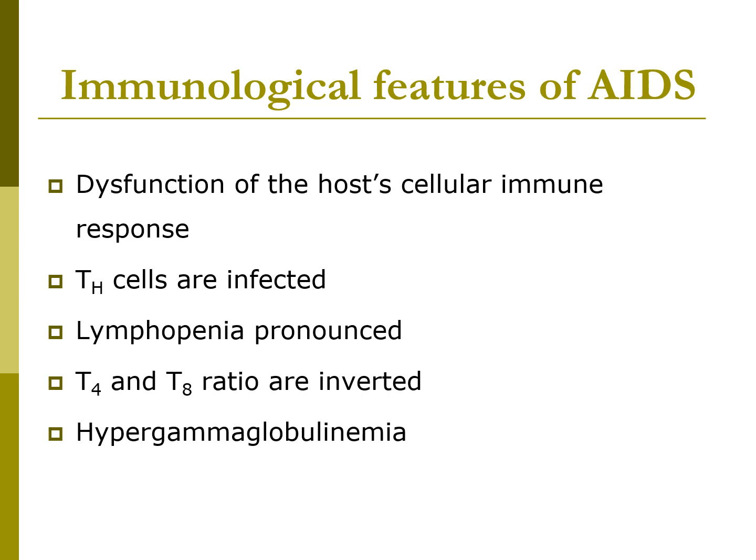The immunological features of AIDS include dysfunction of host cellular immune response. The T-helper cells are infected, and a pronounced lymphopenia occurs. The T4 to T8 ratio is inverted — normally 65% T4 and 35% T8, but in AIDS this is completely reversed. Patients also experience hypergammaglobulinemia.